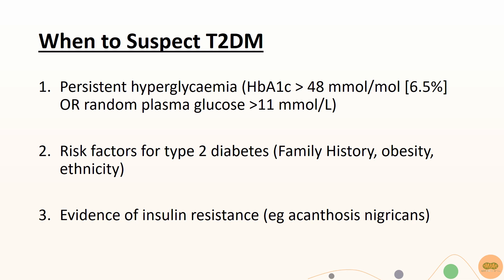You should also suspect type 2 diabetes when there are characteristic features such as thirst, polyuria, blurry vision, weight loss, recurrent infections, and tiredness. You should also suspect it in patients with risk factors such as strong family history, obesity, or ethnicity like Black or Asian family origin, or if there is any evidence of insulin resistance such as acanthosis nigricans.